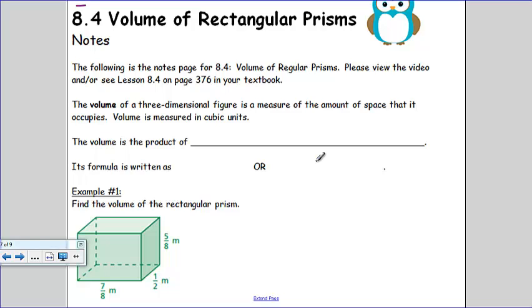The volume of a three-dimensional figure is a measure of the amount of space that it occupies. Volume is measured in cubic units. Up till now we've been doing square units because we've been measuring area, but this is volume, so we'll use cubic units like meters cubed or centimeters cubed.